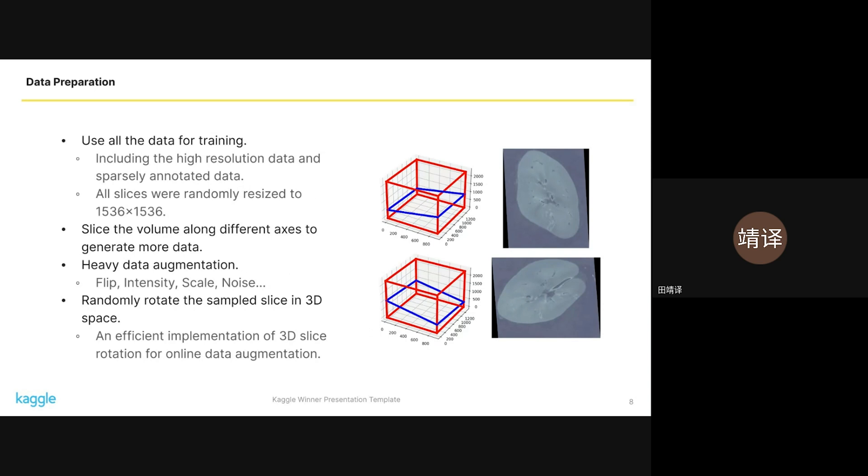In preparing our data, we utilized all available data, including high resolution and sparsely annotated data. We randomly cropped and resized the slice to 1536. We sliced the volume along different axes to generate more data from different views. Heavy augmentation strategies were used involving random flips, random intensity, random scaling, noise addition, and random 3D rotations. We implemented an efficient 3D slice rotation which allowed us to do online data augmentation.